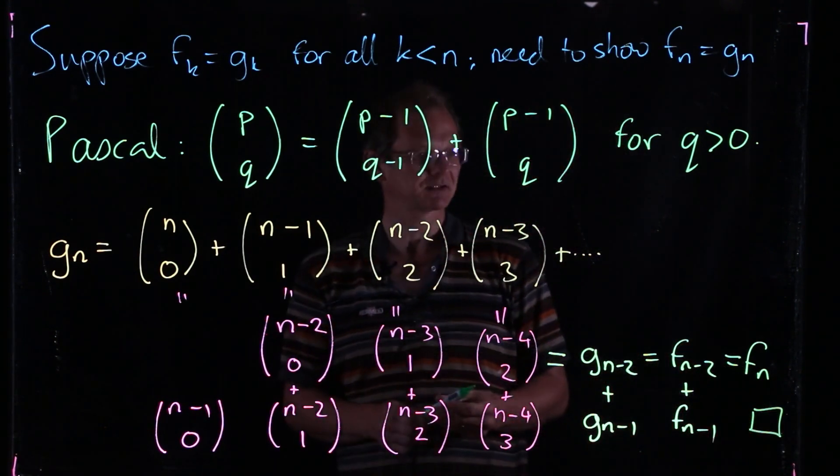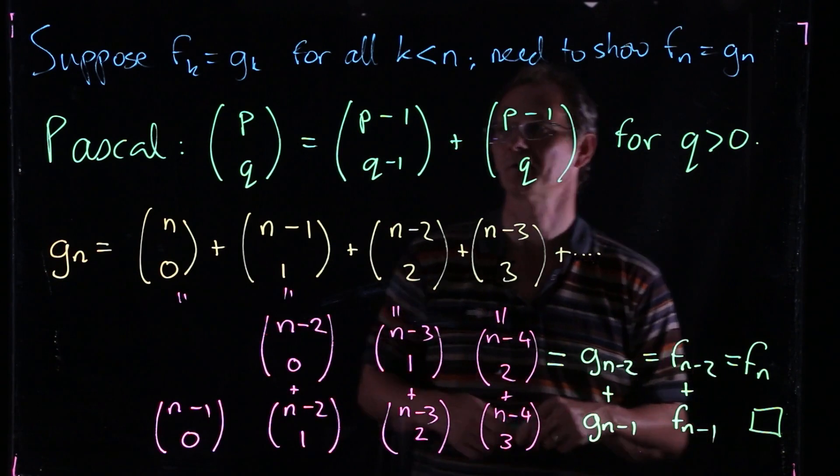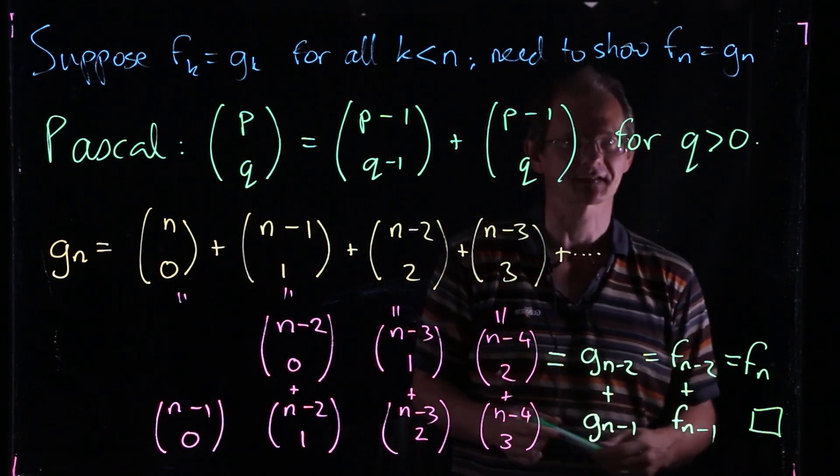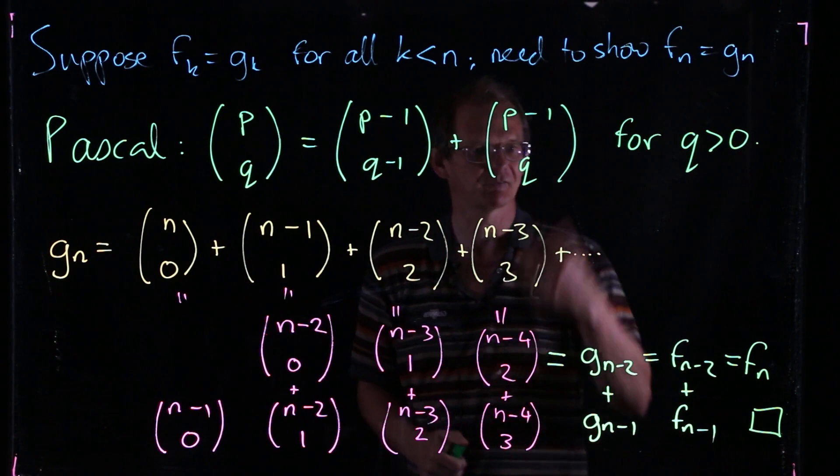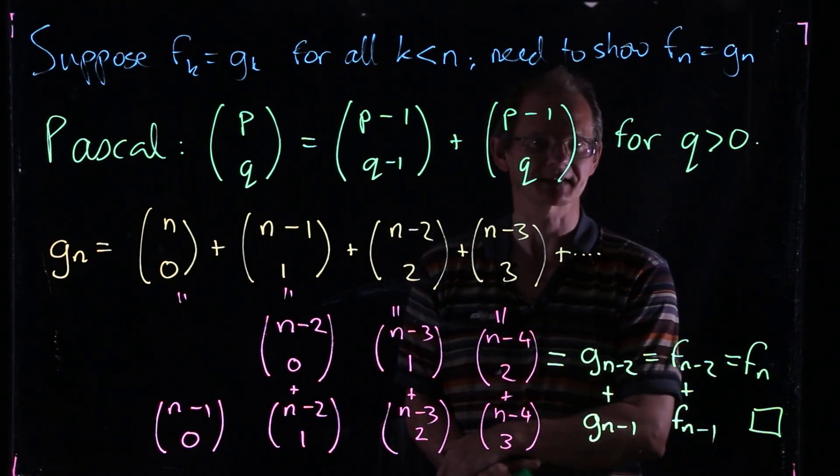And so that completes the induction step. So we know that if Fk and Gk are the same for all k less than n, then it's the same at n as well. And therefore, Fn and Gn are going to be the same for all n.